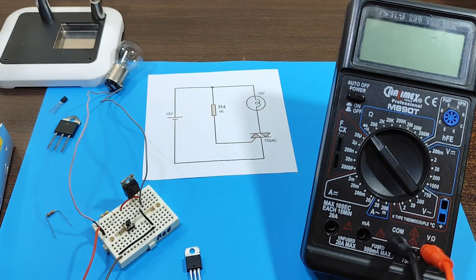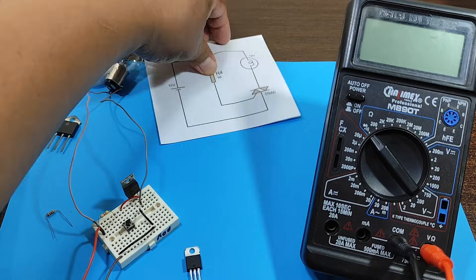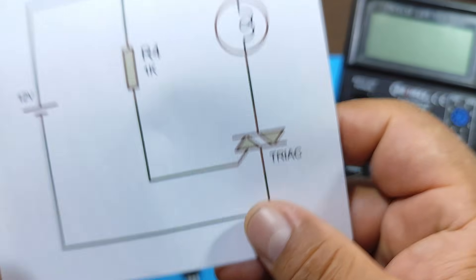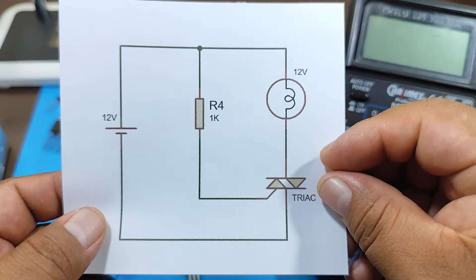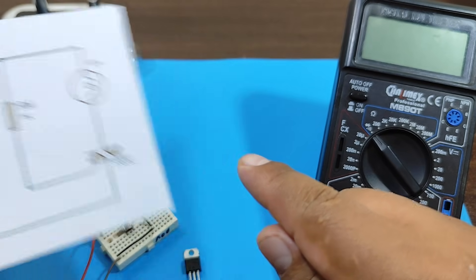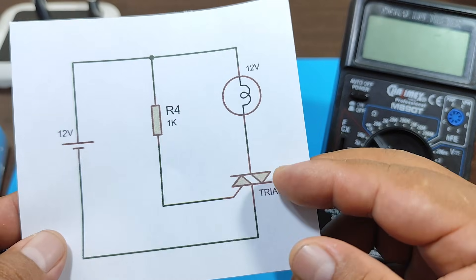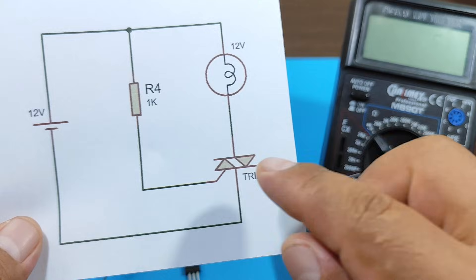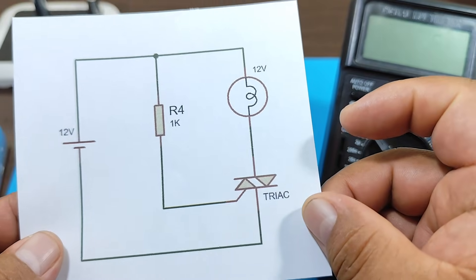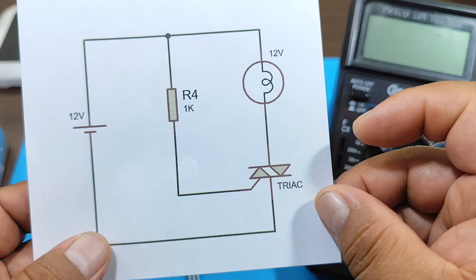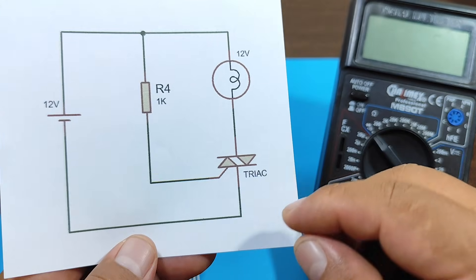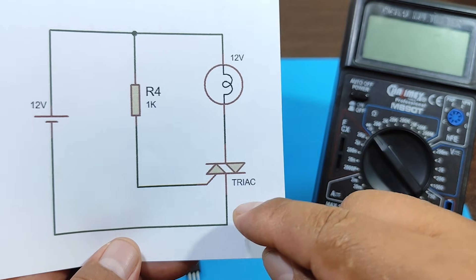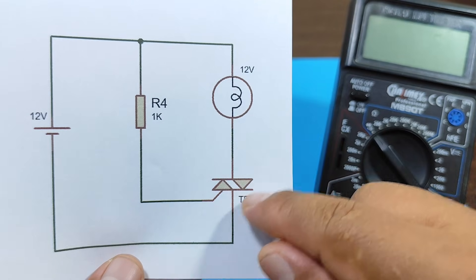Alright. Now to finish up, let's look at this circuit. In this circuit, we'll use a 5W light bulb, which will make the triac handle more current than in the previous circuit. Now, in this circuit, we'll measure the voltage that appears between T1 and T2 when the triac is operating.